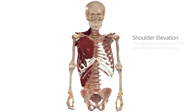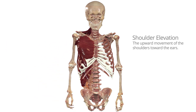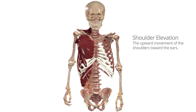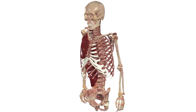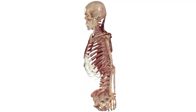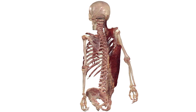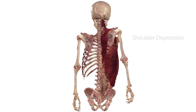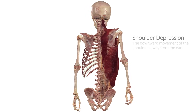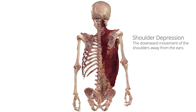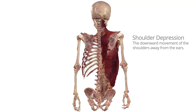Shoulder elevation is the upward movement of the shoulder toward the ears. Shoulder depression is the downward movement of the shoulders away from the ears.